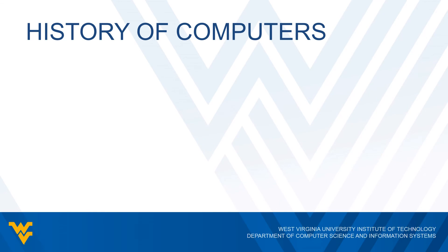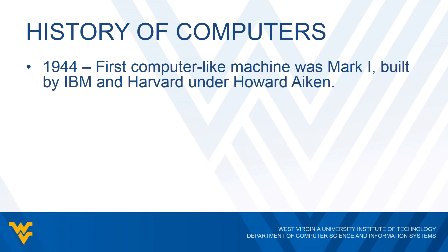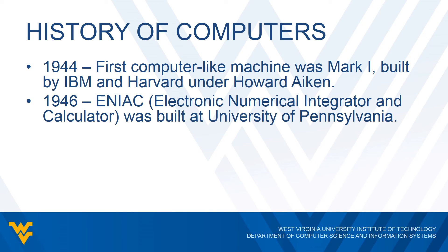The 1940s is where computing really took off. In 1944 we got our first computer-like machine — everything up to this point were just calculating machines performing simple operations, but this was the very first machine that resembles our modern-day computers. This was the Mark 1, which was built by both IBM and Harvard together, with Howard Aiken in charge of the project. This was improved in 1946 when the University of Pennsylvania created the ENIAC, which stands for Electrical Numerical Integrator and Calculator.